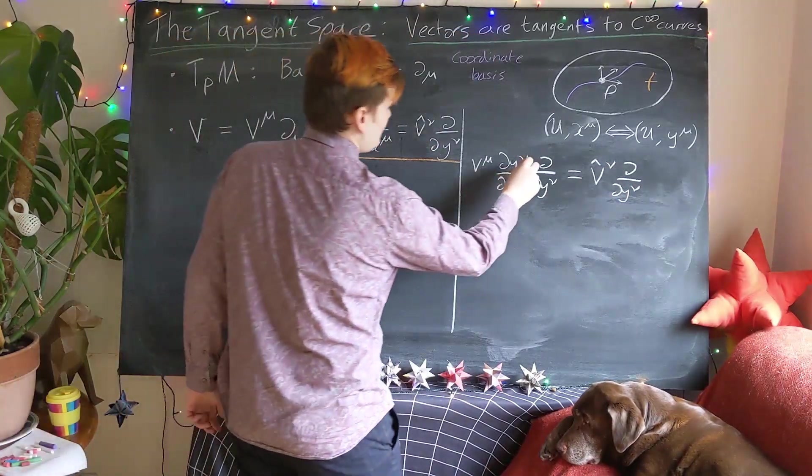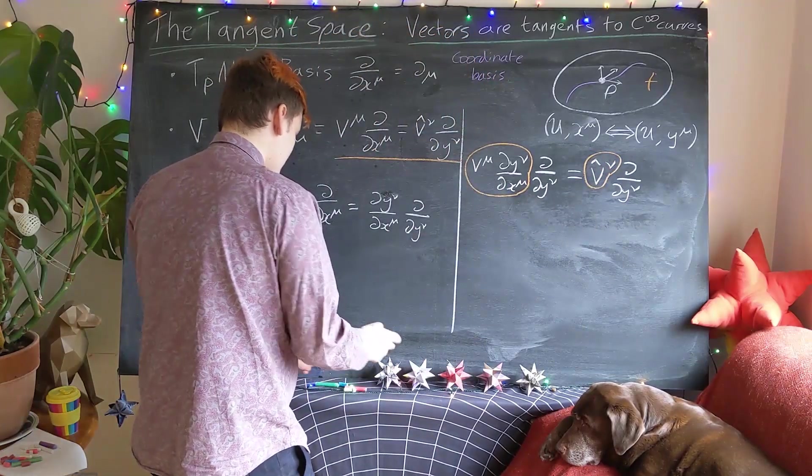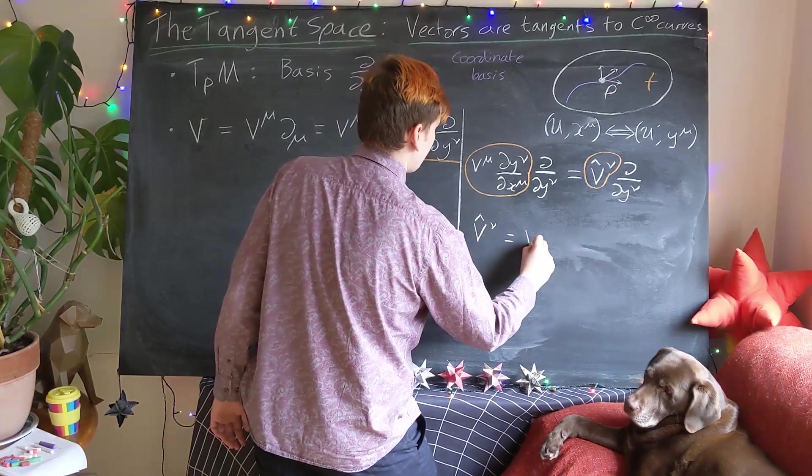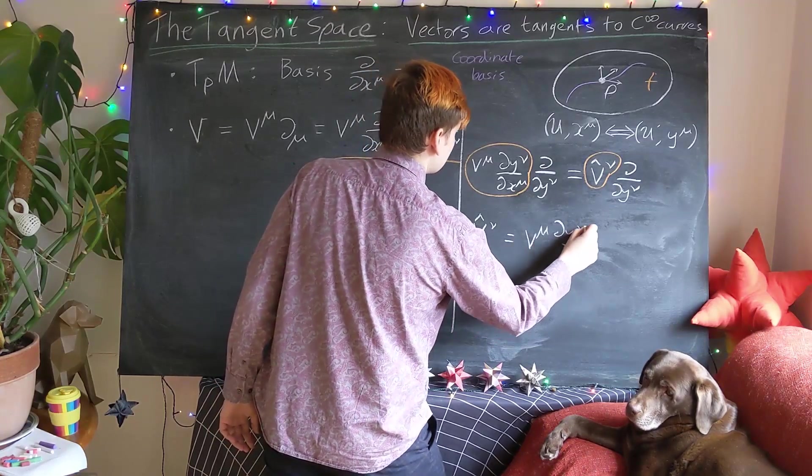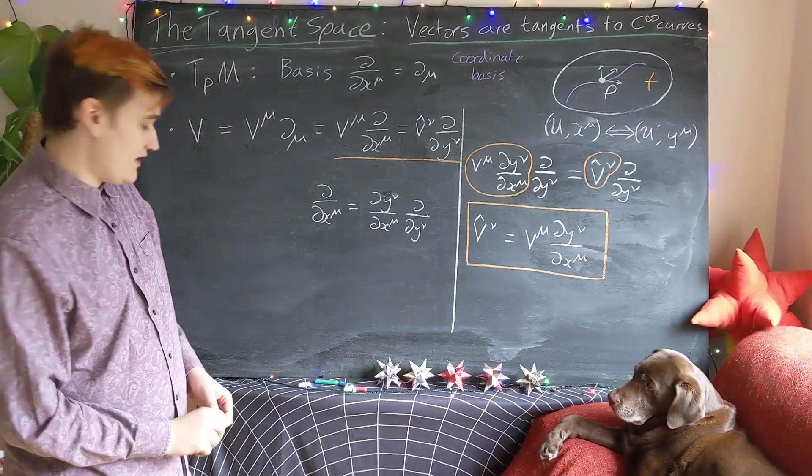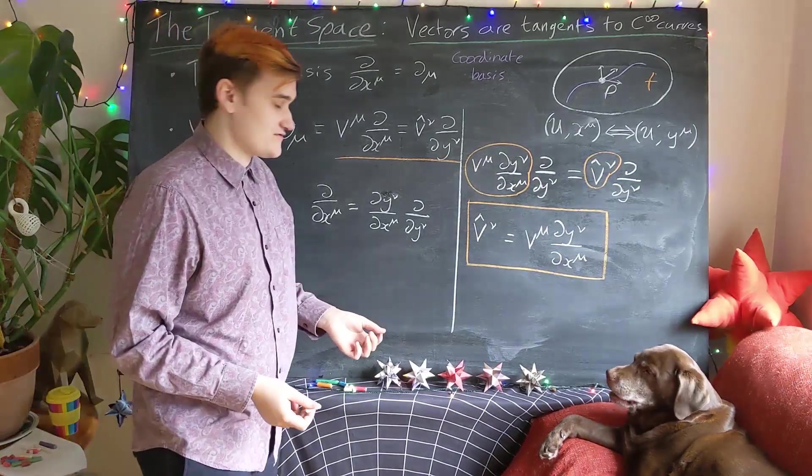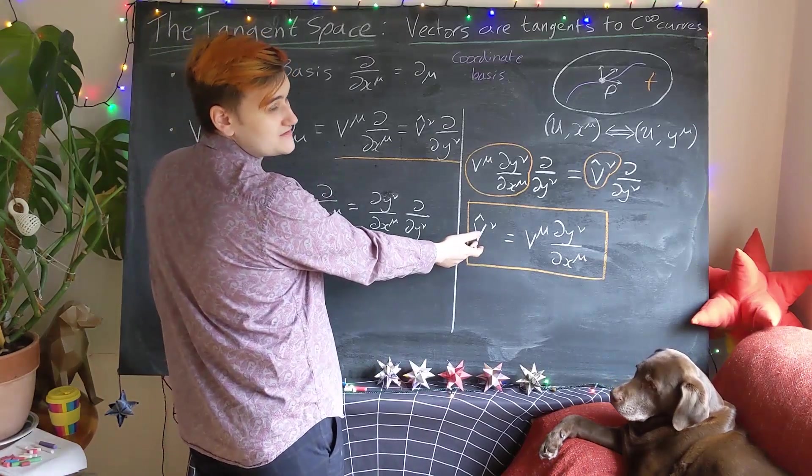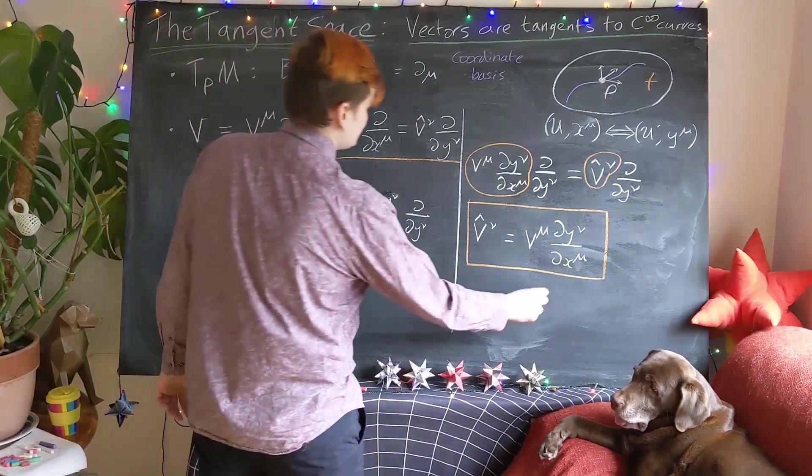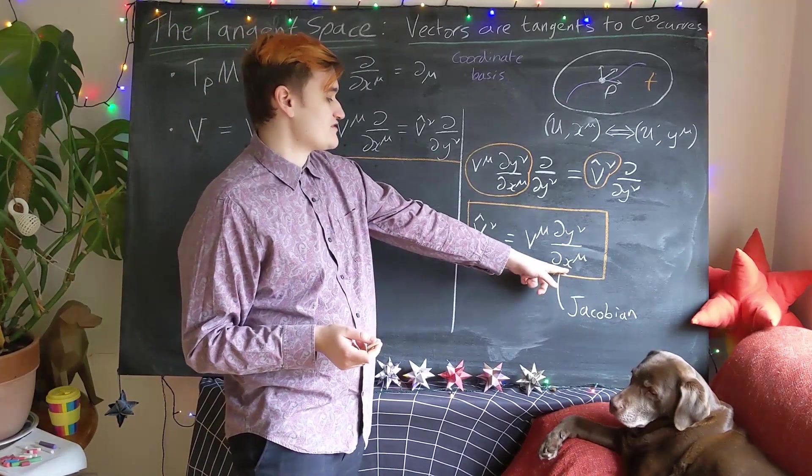And now we can identify this with this. And simply write down that our new coordinates or new components, the hat in the y coordinate system, are given by the old coordinates, then times by this kind of new object here. So maybe you'll recognize this formula as just the transformation law for a vector, or vector components rather. Essentially it's telling you the new components in terms of the old components. And this function or this derivative is what tells you how the coordinates change. And it's sometimes referred to as the Jacobian. Essentially just the derivative of the new coordinates with respect to the old coordinates.